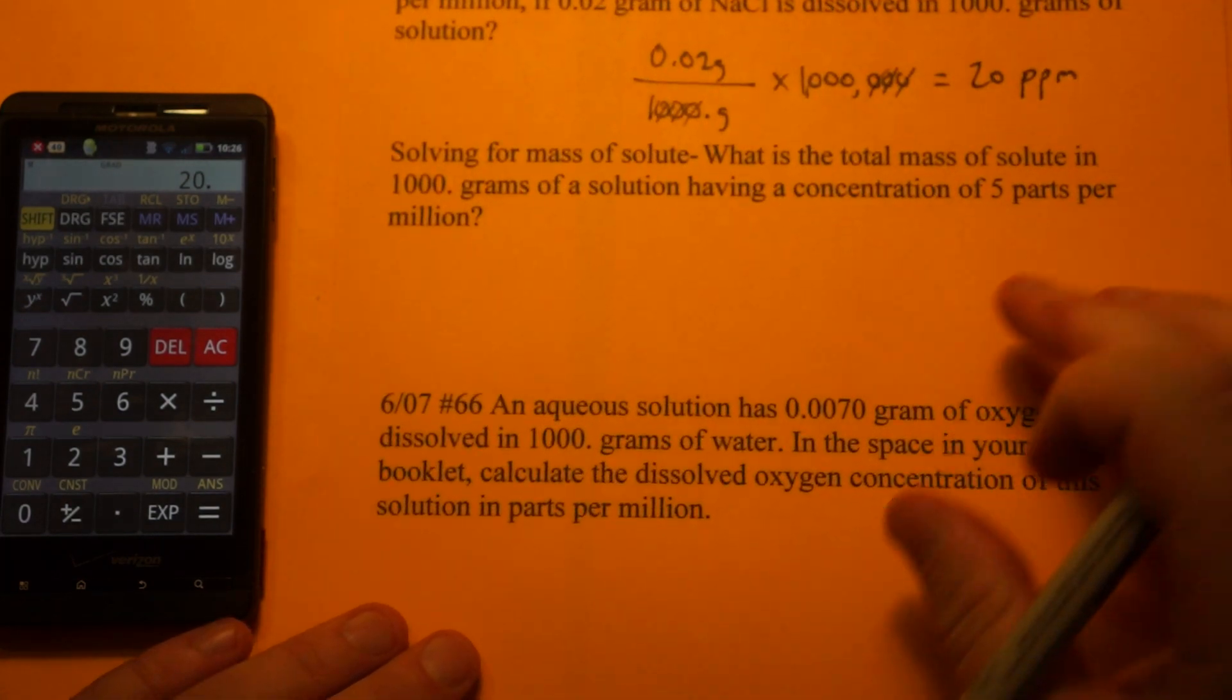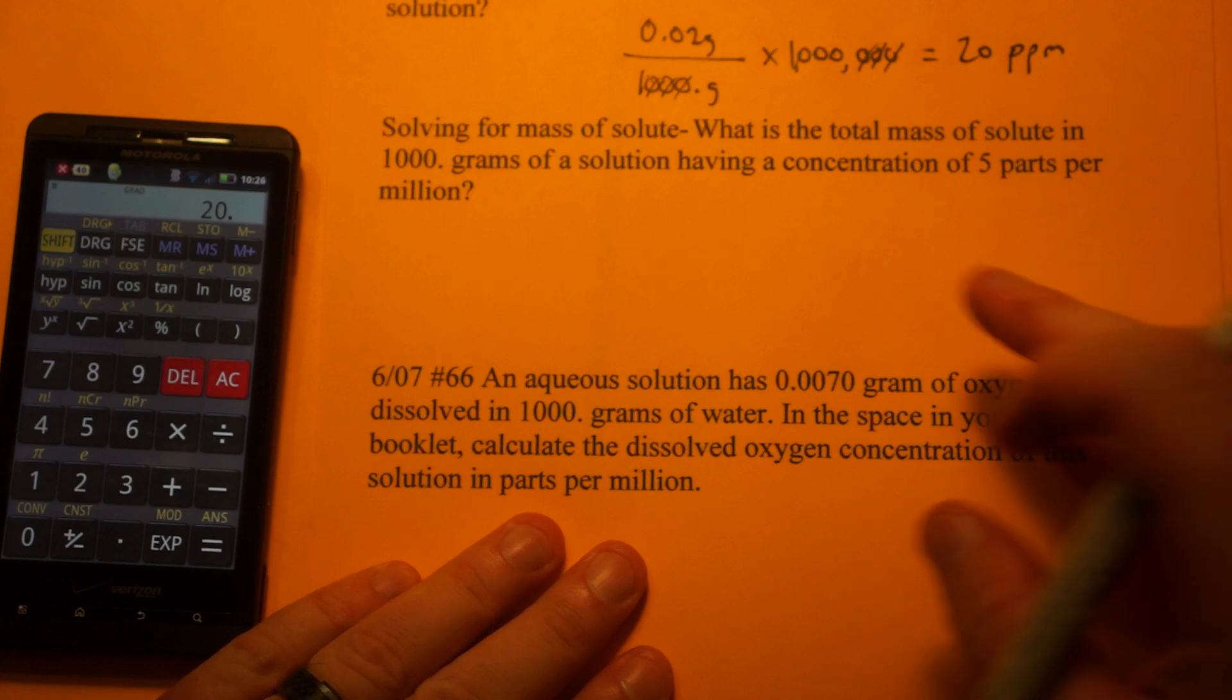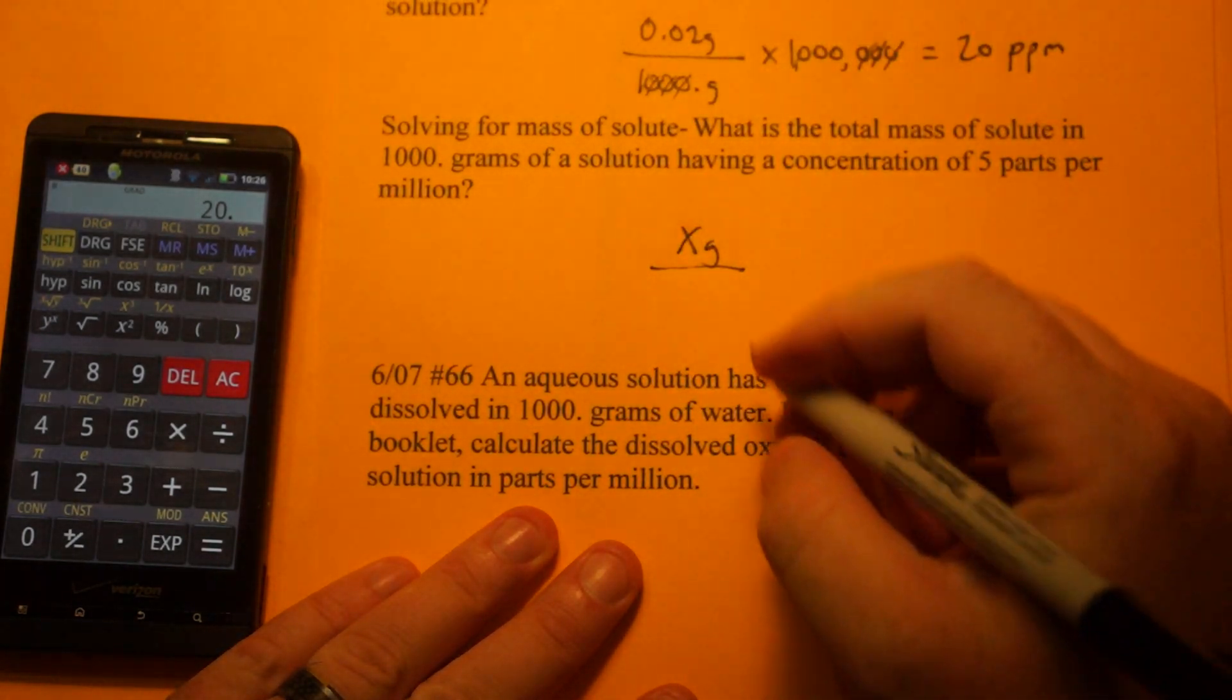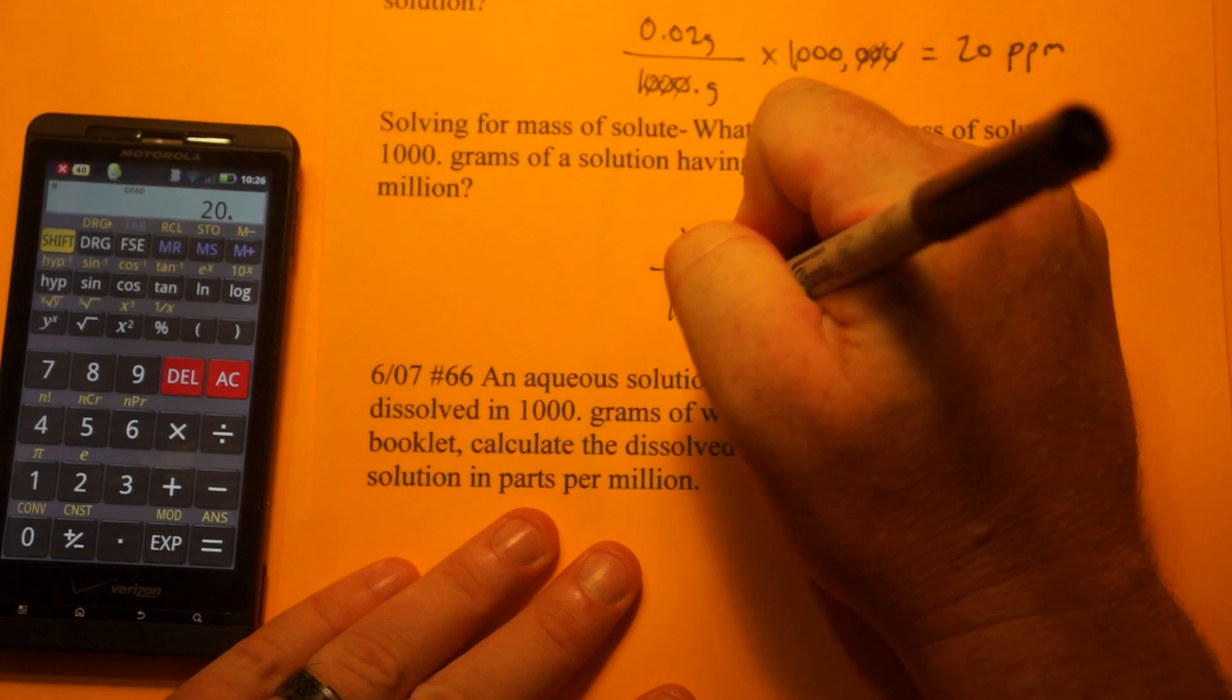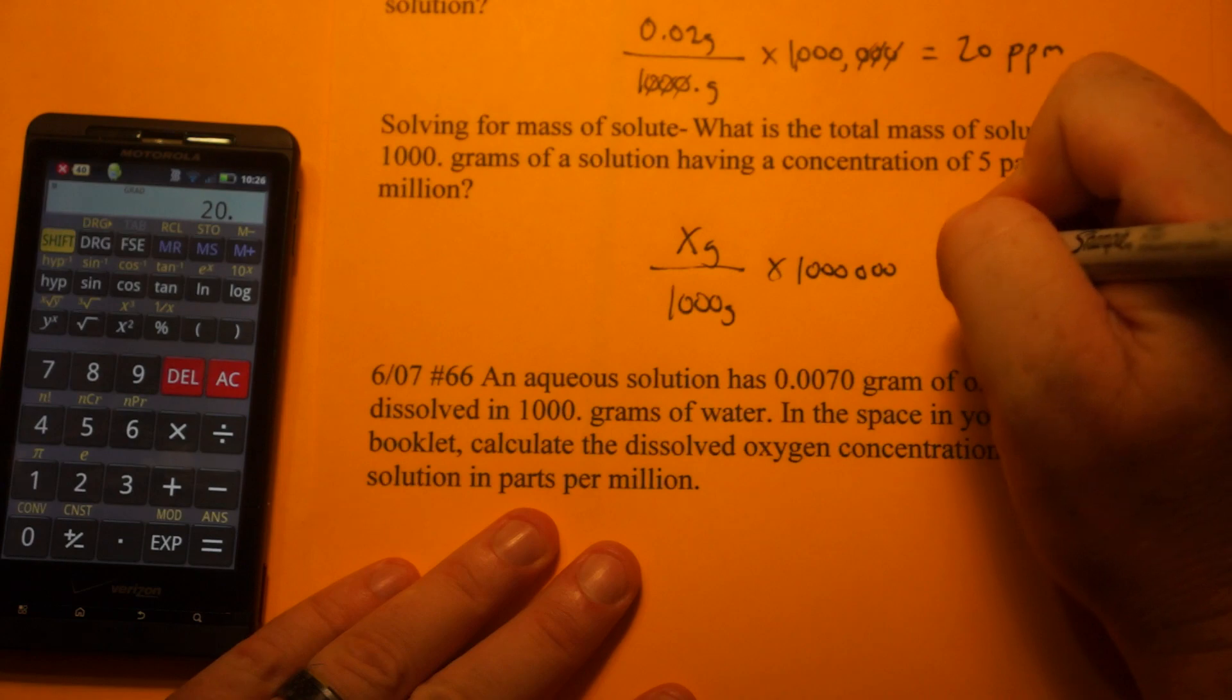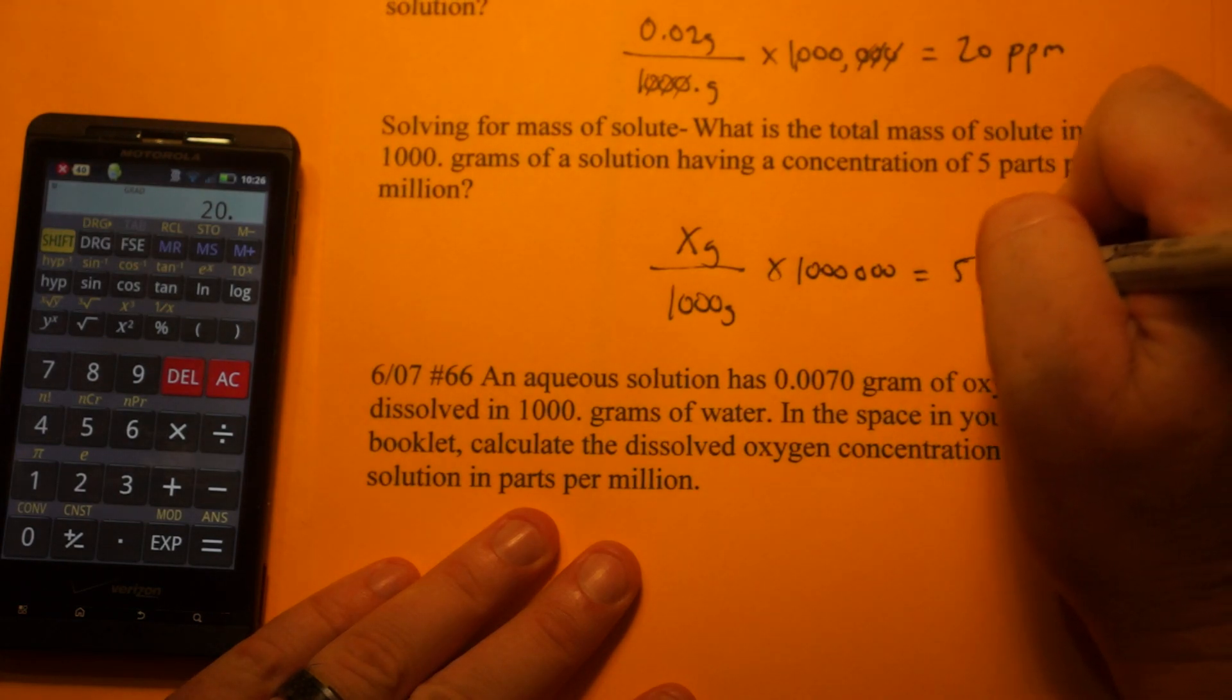Okay, the next problem we're going to solve for mass of solute. What's the total mass of solute? So we have x grams over 1,000 grams of solution times 1,000,000 is equal to 5 PPM.